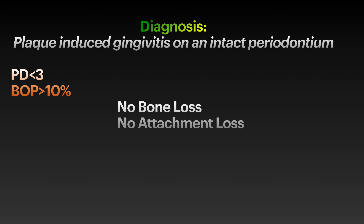To find the diagnosis, I identify the highest pocket depth, which here is 3 millimeters. I also check my bleeding points and divide by the number of teeth — the result here is more than 10%. As I don't have pockets more than 3 millimeters, I don't need to take an x-ray to check bone loss. Also, I don't have attachment loss, so my diagnosis is plaque-induced gingivitis on intact periodontium.